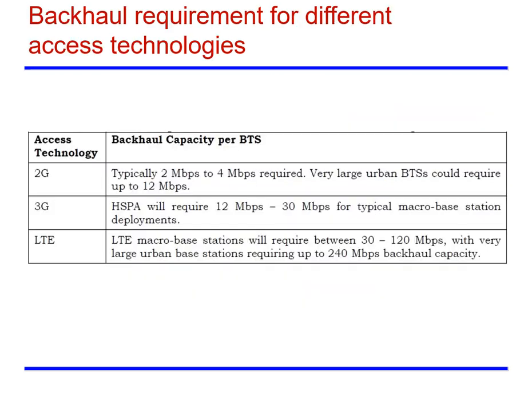Backhaul requirements for different access technologies: for 2G mobile access technology, the backhaul requirement is typically 2 Mbps to 4 Mbps, though very large urban BTS sites could require up to 12 Mbps. 3G High-Speed Packet Access will require 12 Mbps to 30 Mbps for typical macro base station deployments. For LTE, micro base stations will require bandwidth between 30 to 120 Mbps, with very large urban base stations requiring up to 240 Mbps backhaul capacity.